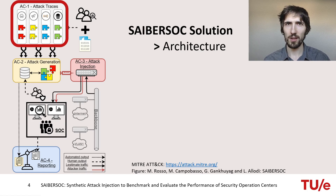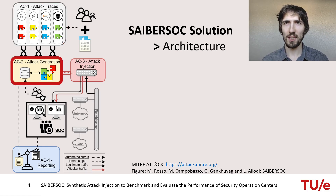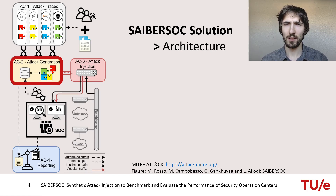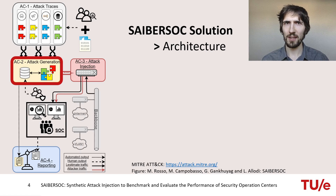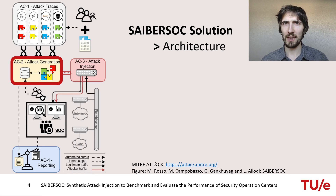The second component is attack generation. Here we assemble attacks from individual attack traces from the library. For example, we take a port scan from the reconnaissance section, an exploit from the initial access section, maybe a second exploit because the first one didn't work, and in the end we add some command and control activity. We need to make sure that attack traces are in a plausible logical order, and to do that we again use the MITRE ATT&CK framework. Lastly, we ensure that IP addresses are coherent, meaning that the attack traces all have the same attacker and victim IP addresses.